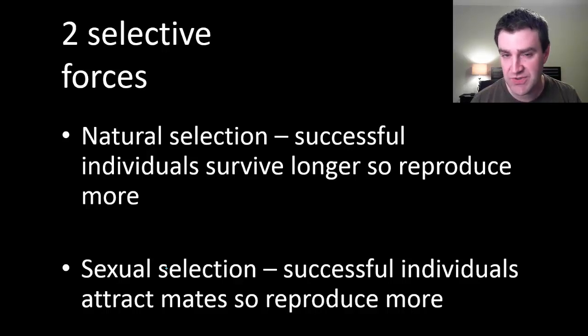In natural selection, maybe individuals have certain phenotypes that help them survive better, and if they survive better in nature they'll probably reproduce more. Whereas sexual selection involves having traits or phenotypes that make individuals more attractive.